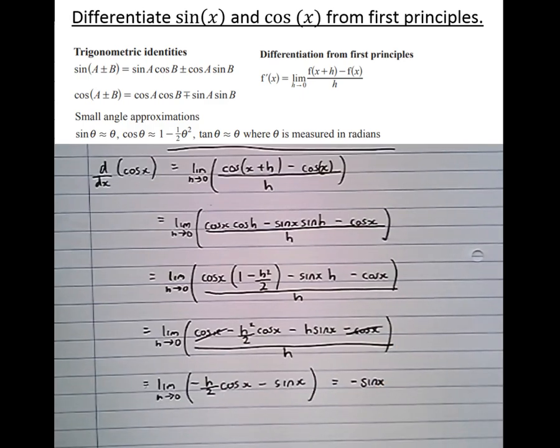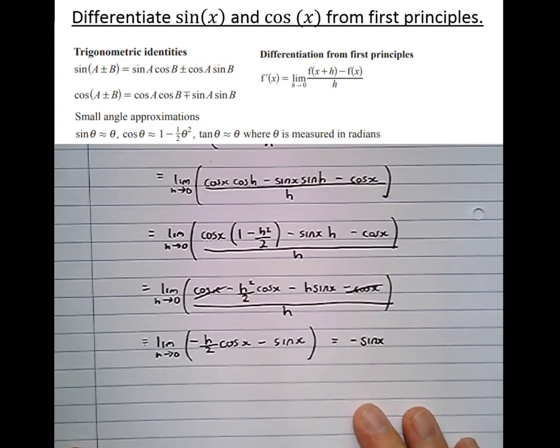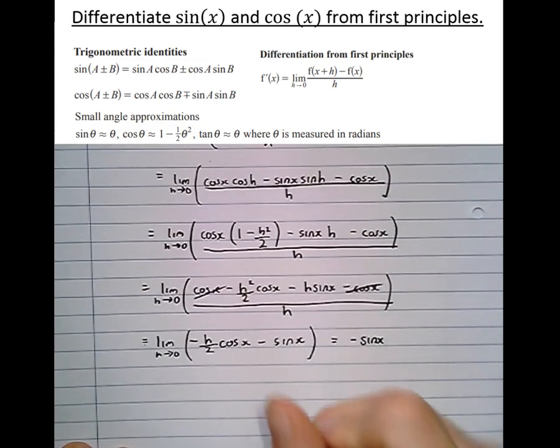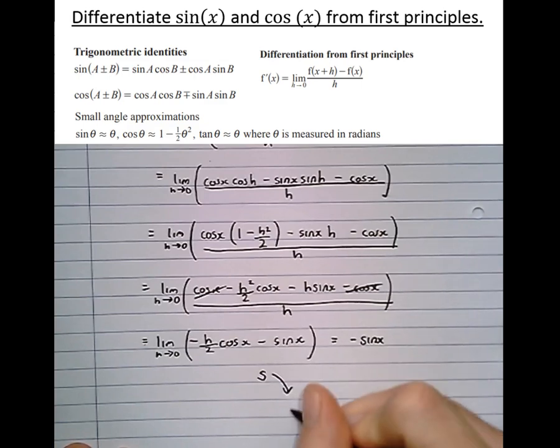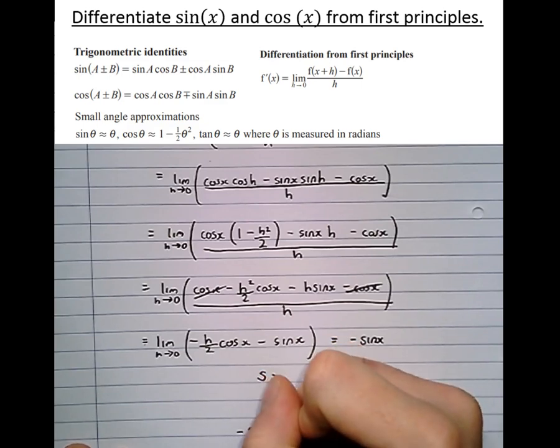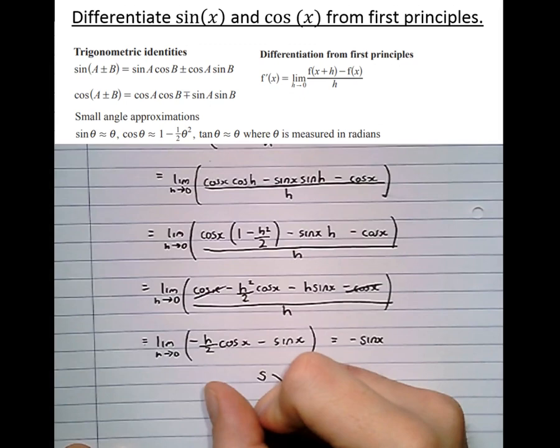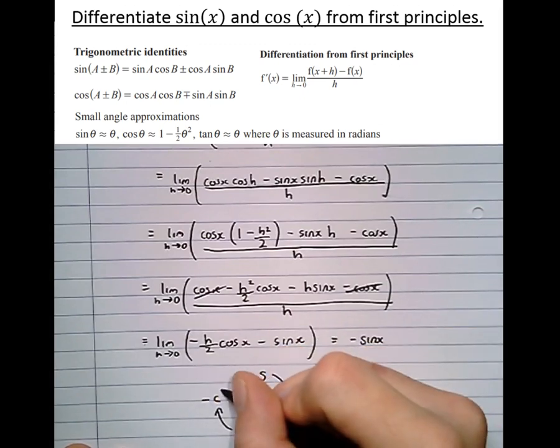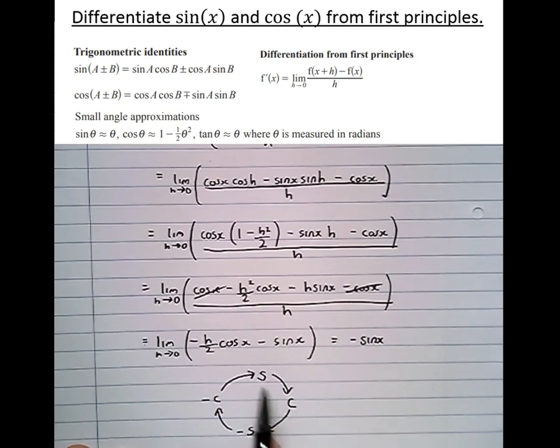So the differential of sin x is cos x and the differential of cos x is minus sin x. When differentiating trig functions, sine and cos becomes cyclic. We get sine which differentiates to cos, which differentiates to minus sine. We differentiate minus sine which becomes minus cos, and back to the start again. It keeps going around in this cycle.